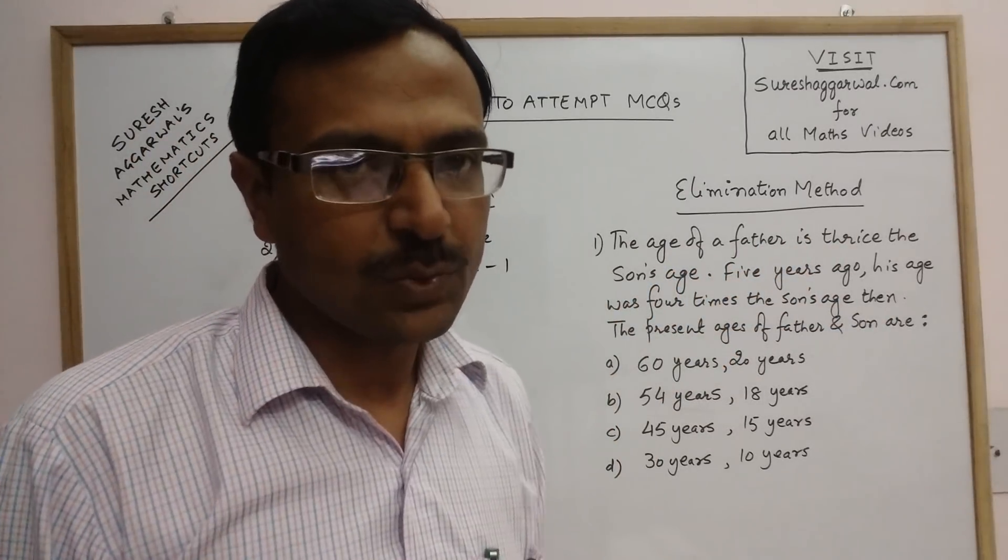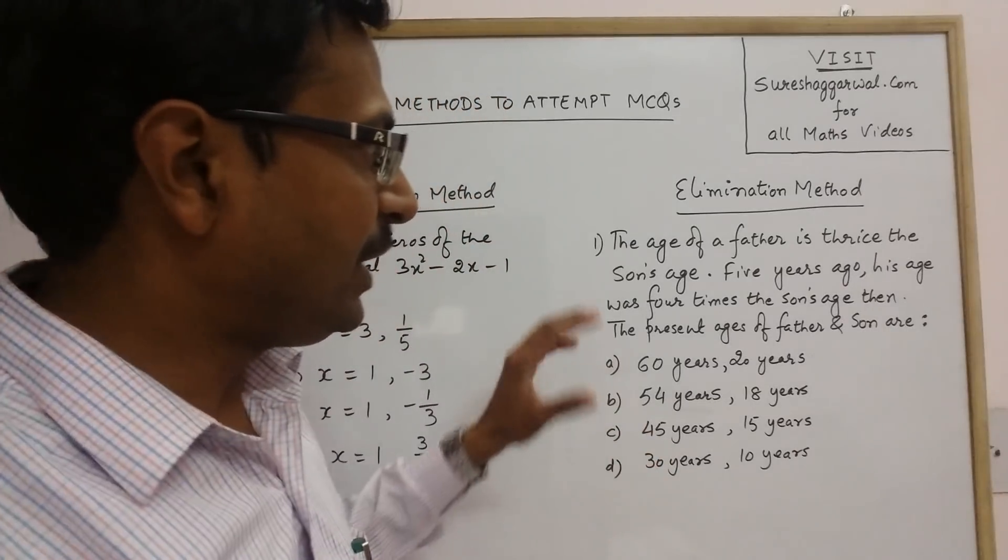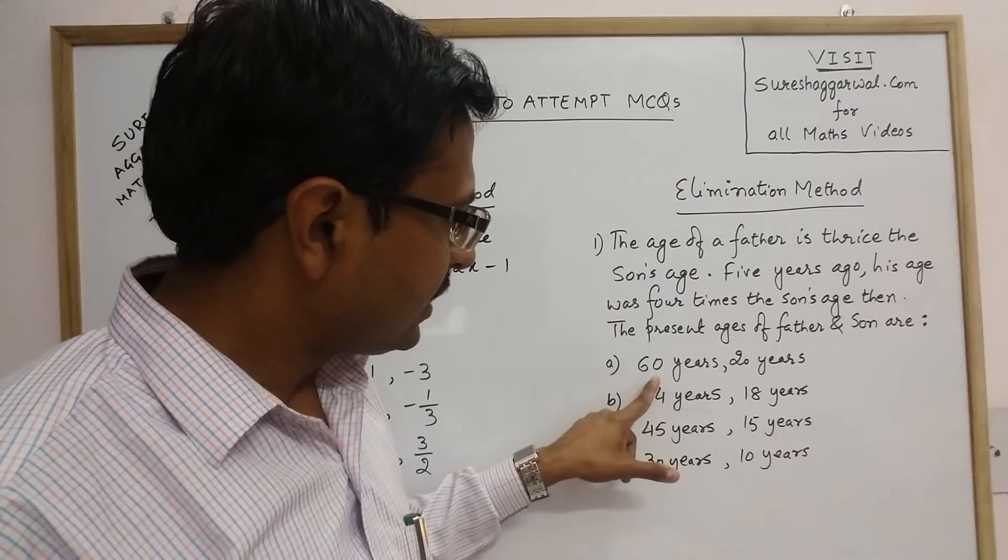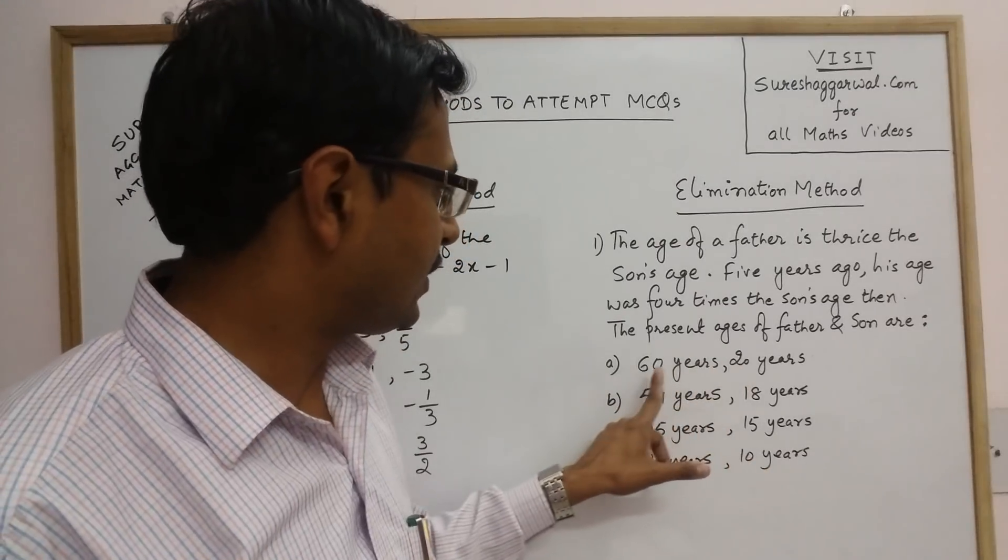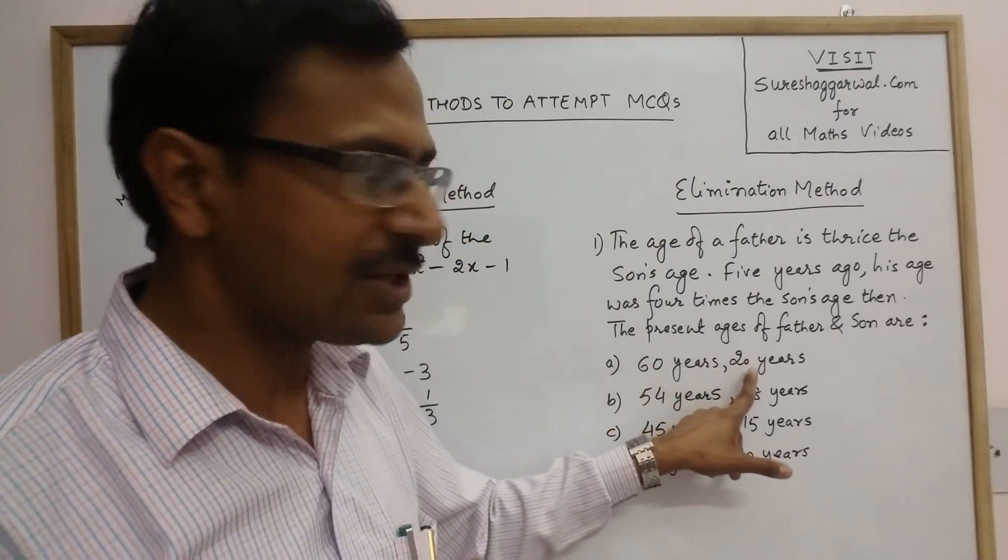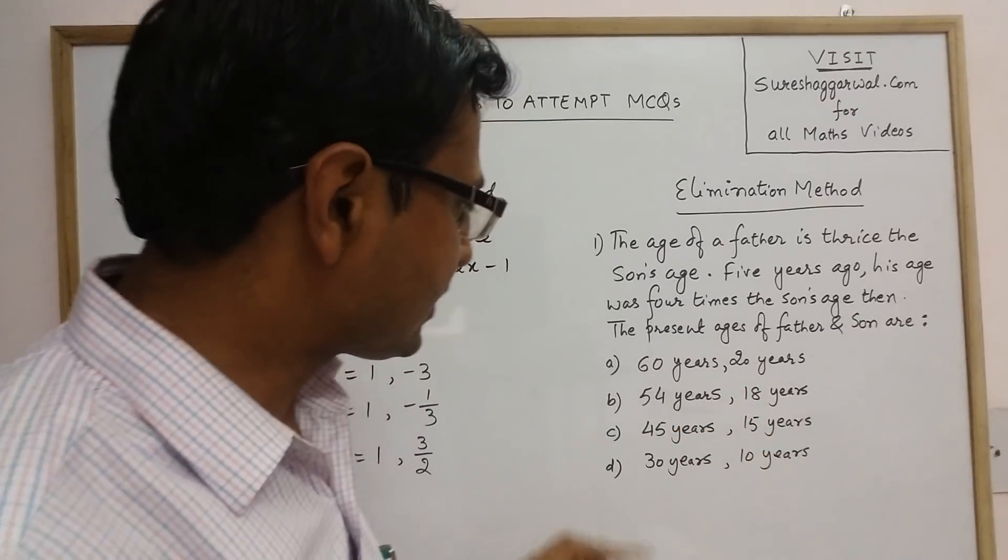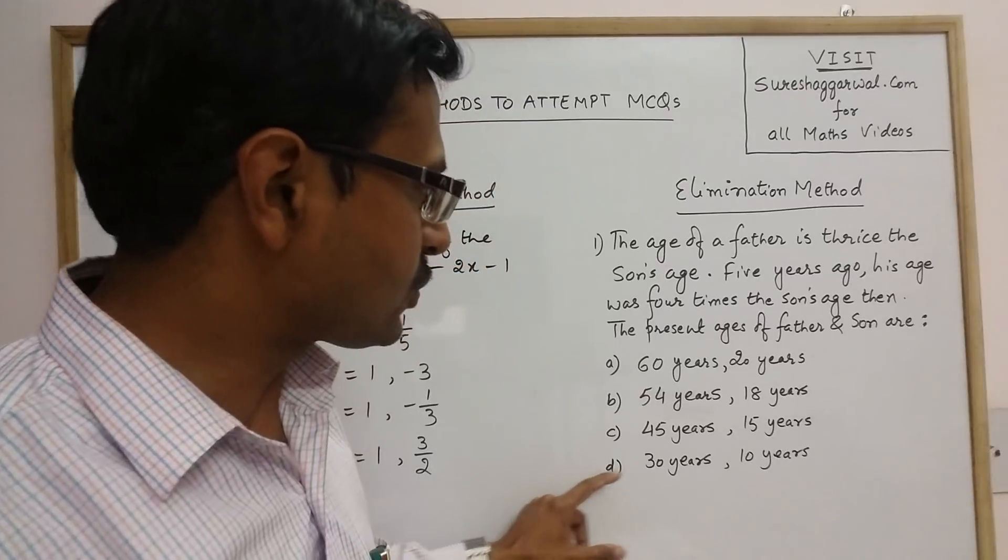Now see, we are given that age of father is three times the age of son. So, the first equation will be an equation in two variables obviously. Now see, 60 years, 20 years. Age of father is three times the age of son, so it can be a possible answer.